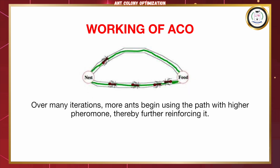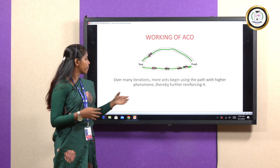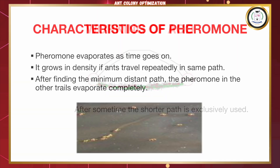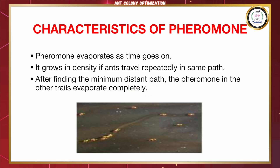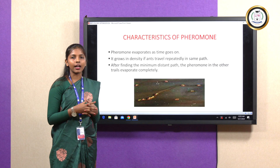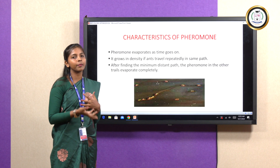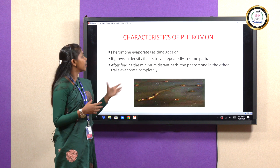Over many iterations, more ants begin to use the path with the higher pheromone, thereby further reinforcing it. After some time, the shorter path is exclusively used by the ants. In the same way, artificially while finding a solution, the shortest path will be given more importance and the optimal solution will be gained from the shortest path.